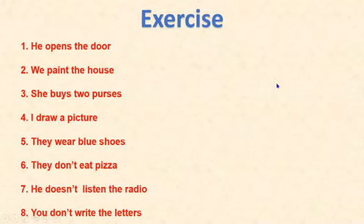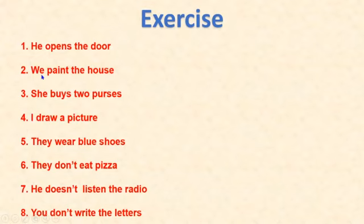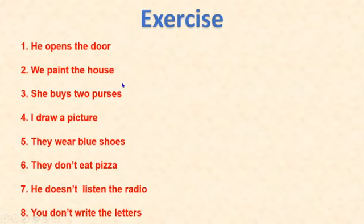Now I want to check a simple exercise. We have eight sentences in present simple, in active voice. The idea is you have to write the sentence in passive voice. For example: 'He opens the door,' 'He paints a house,' 'She buys two purses,' 'I draw a picture,' 'They wear blue shoes,' 'They don't eat pizza,' 'He doesn't listen to the radio,' and 'You don't write letters.' Focus on the objects: the door, the house, two purses, a picture, blue shoes, pizza, the radio, and letters.